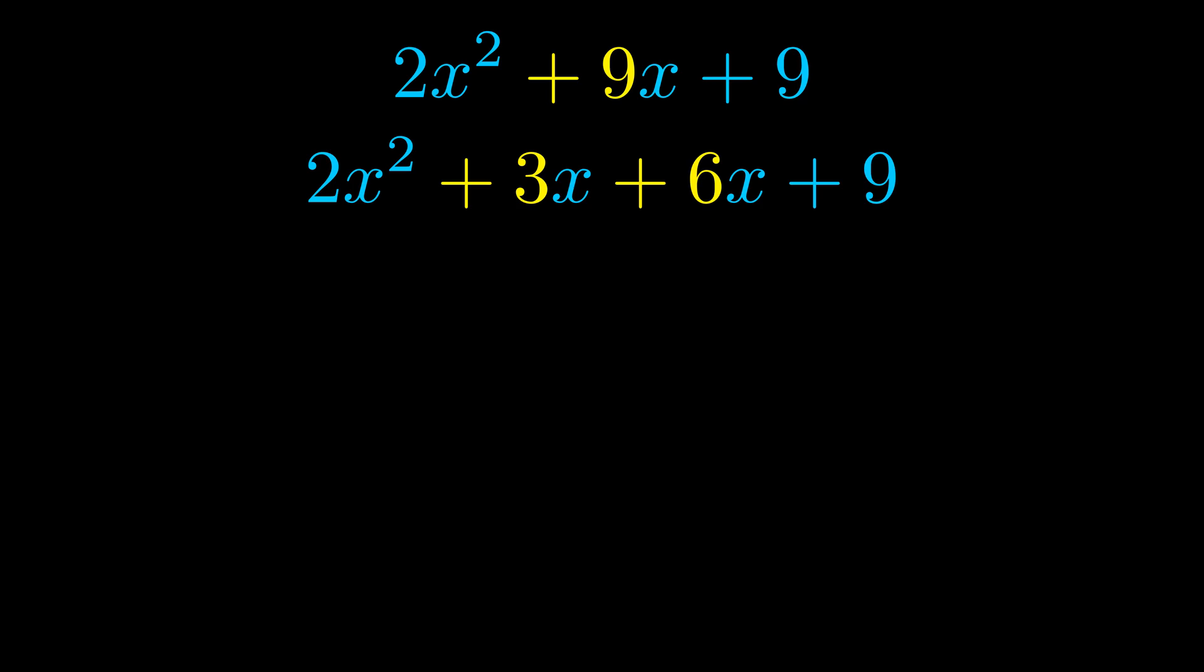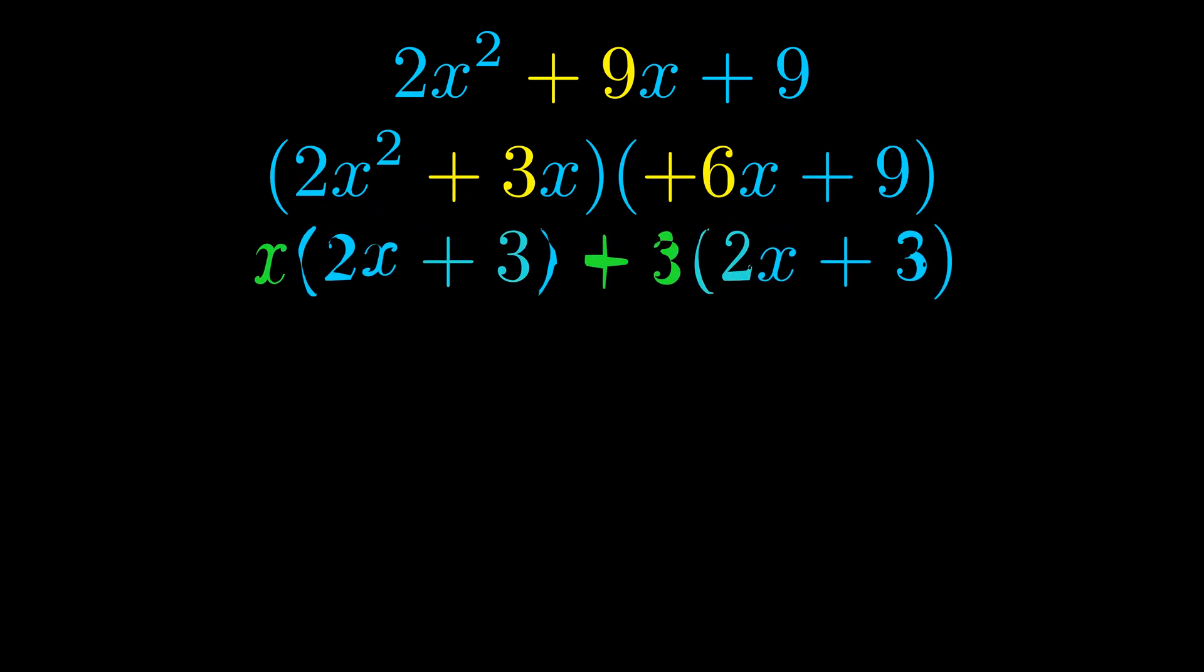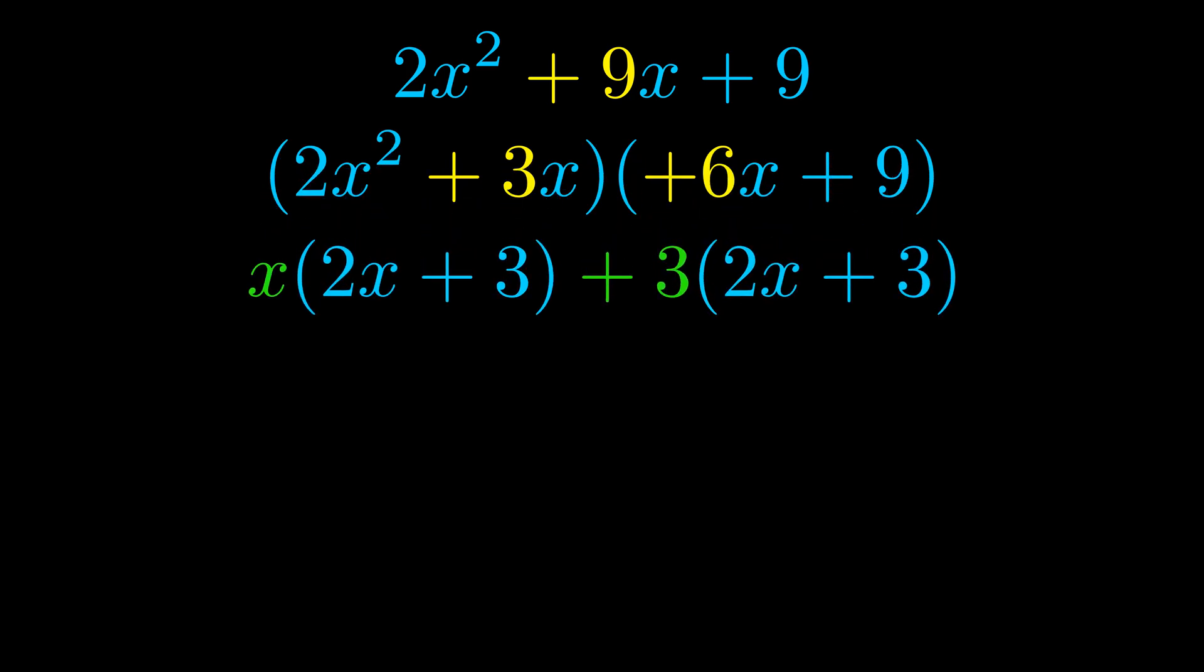Once we've done this we go ahead and we put parentheses around the first term and the last term. And we do that so that we can take the greatest common factor out of both terms. We can see the greatest common factor is now outside in green.